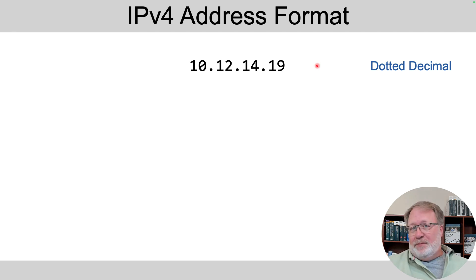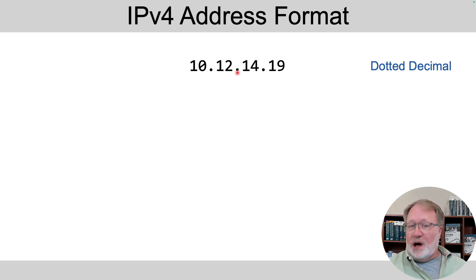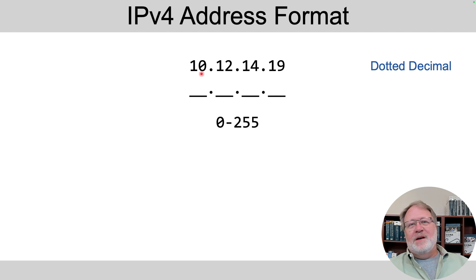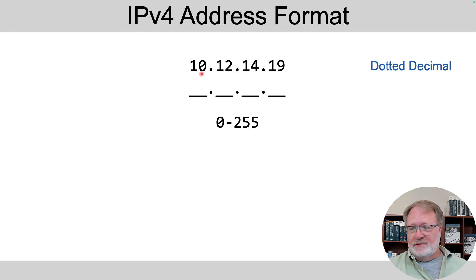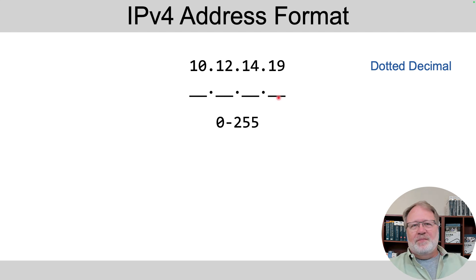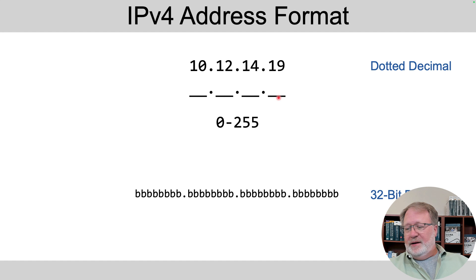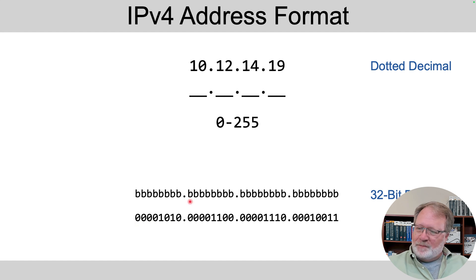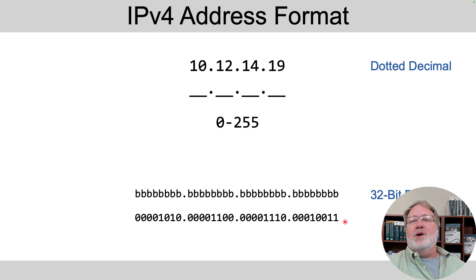We haven't talked about IP addresses in a while, so a few facts: they're dotted decimal numbers — decimal numbers separated by dots. Each decimal number can range from 0 through 255, which means they represent eight binary digits, or eight bits. So with eight bits, eight bits, eight bits, eight bits, they add up to 32 bits total. You can look at IP addresses in binary — for example, 10 converts to these eight bits, 12 converts to these eight bits — although most of the time we prefer to work in decimal format.